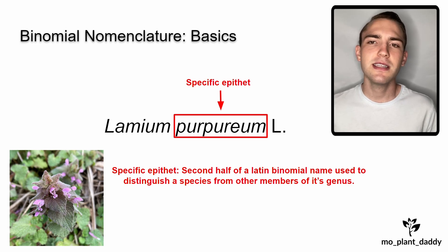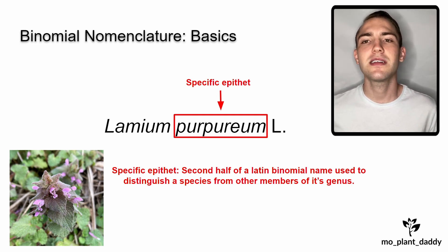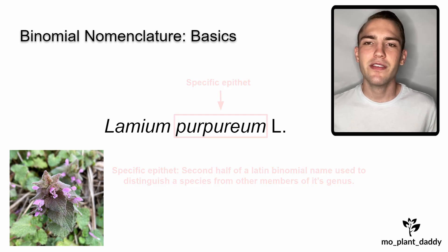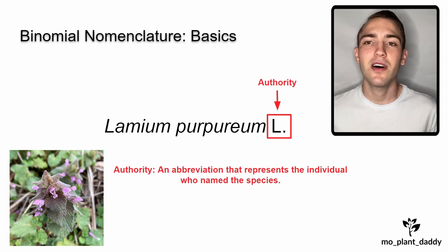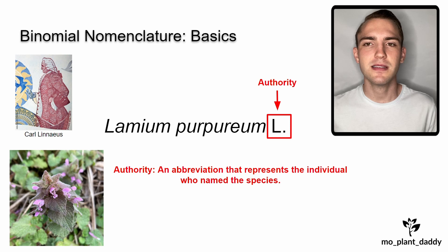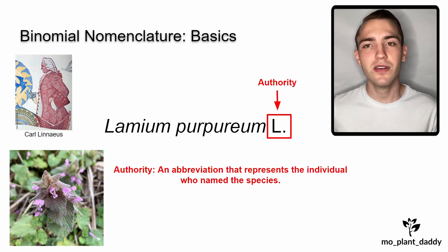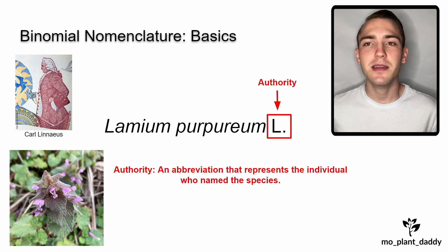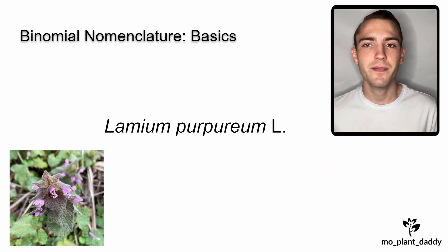Now, the genus and specific epithet together are considered the Latin binomial. However, you can take it a step further and add what is called an authority. An authority is an abbreviation that represents the individual who named the species. In this case, L stands for Carl Linnaeus, who is actually the one who invented the binomial nomenclature system.